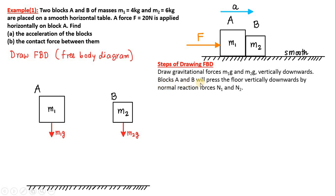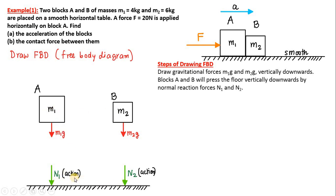Next, the blocks A and B will press the floor vertically downward. Because these two blocks M1 and M2 are being pulled down due to Earth's gravity, they are actually pressing the table surface. The forces with which A and B press the surface of the table are the normal reaction forces N1 and N2, directed vertically downwards.